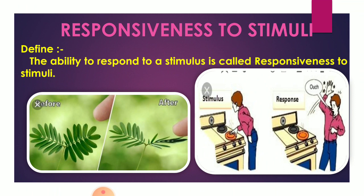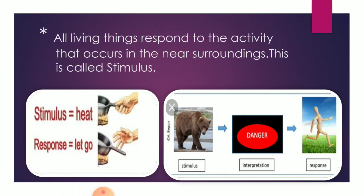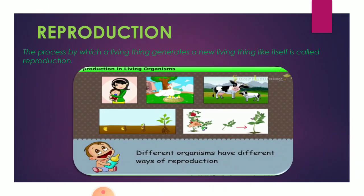That means it is responding to the activity when you touch the leaves. The second example: a person tries to touch a hot object, and as he touches it, he is responding. So all living things respond to activities that occur in their near surroundings — this is called a stimulus. The second example also shows us that a person runs away as he sees a bear, meaning he is responding to the activity.